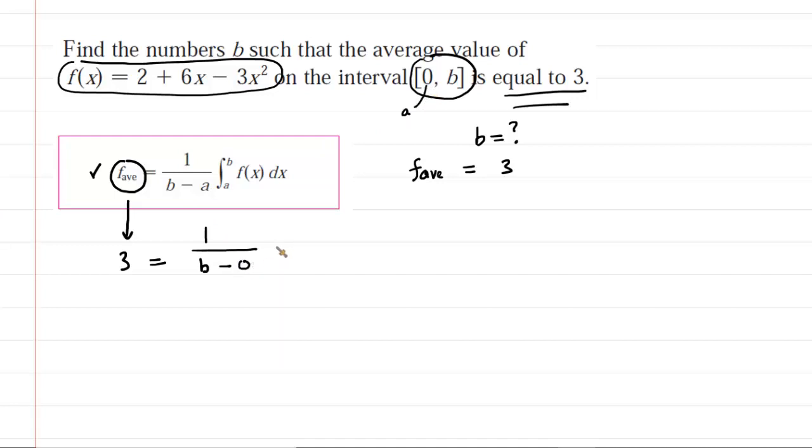So we'll plug that in right there. And then that's multiplied by the integral from the lower limit of 0 to the upper limit of b of our function. Our function is defined in the question right here. So we can fill that in as 2 plus 6x minus 3x squared. And then we are integrating with respect to x.